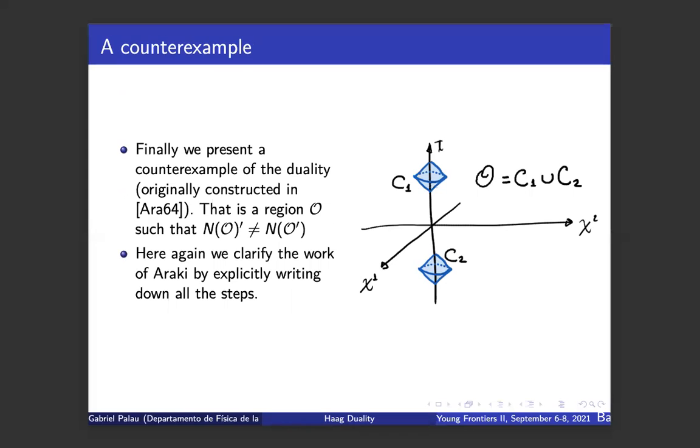The second quantization map is a map that takes two spaces of the one-particle space and assigns von Neumann algebras. To prove the Haag duality in this context, we follow Eckmann-Osterwalder with a simplification of his proof. As I said before, we don't expect duality to hold in all kinds of regions, so we present the regions which break duality. These regions really can't be a diamond—actually it's a union of two timelike separated diamonds. Again, we clarify all the points by explicitly writing down all the steps in the work of Araki. Thanks.